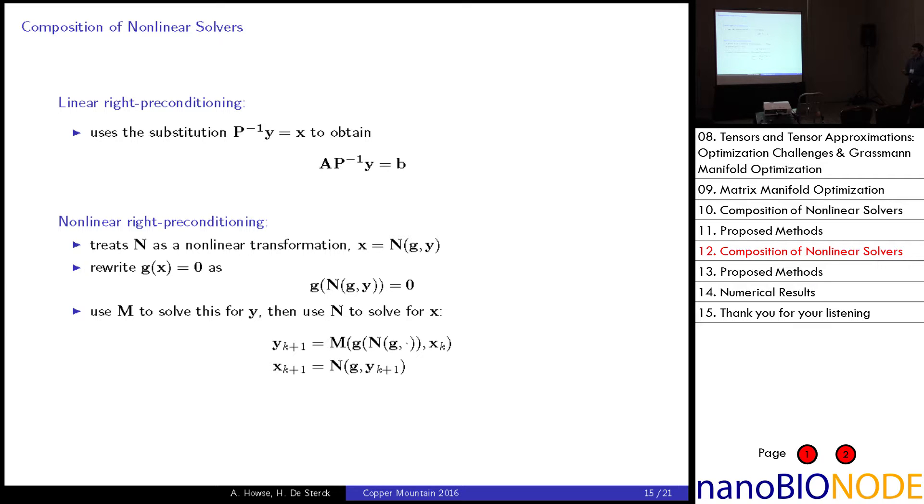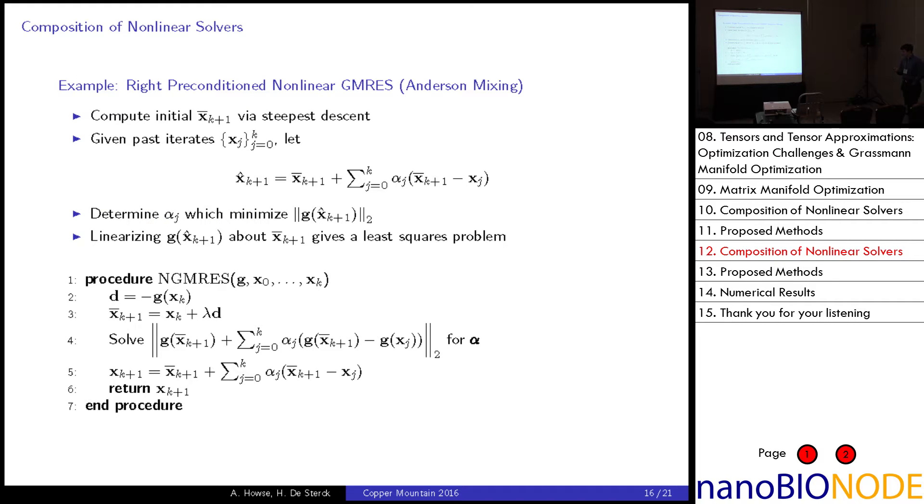So, having looked at left preconditioning, there is also the idea of right preconditioning, which again is based off the example for linear systems. We can use the substitution x as p inverse y to obtain the problem a p inverse y is equal to b. We solve this for y and then we can make this substitution back for x. For nonlinear right preconditioning, we treat n as a nonlinear transformation once again. We can say that x will be n of g and y. So, if this is what x is, then we can say g of x is equal to g of n of g and y is equal to zero. And in this case, we can use M to solve this problem and then use n to solve for x. So, it works in very much the same way.